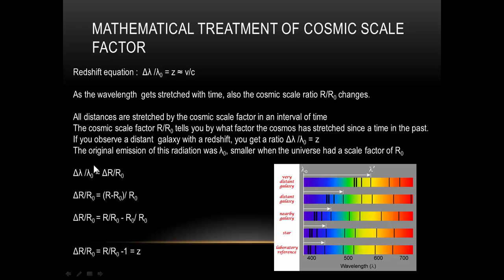and that will be equal to Z, because this is the redshift. So this is the equation that is most useful to us. The ratio of the cosmic scale factors minus 1 is equal to the redshift.